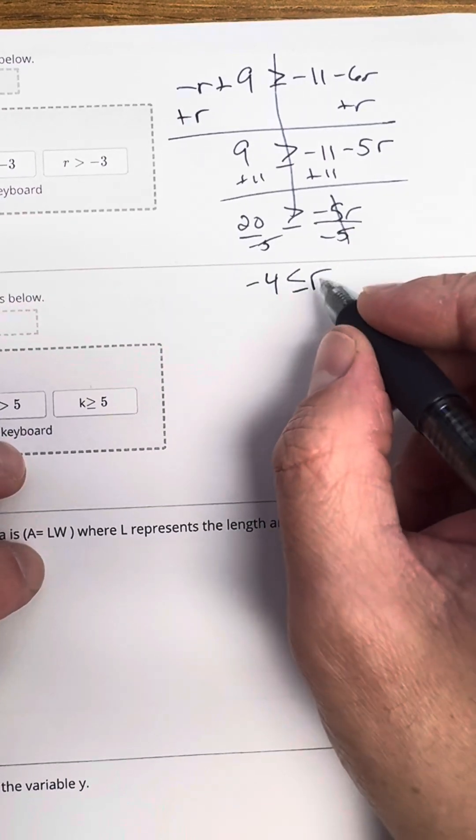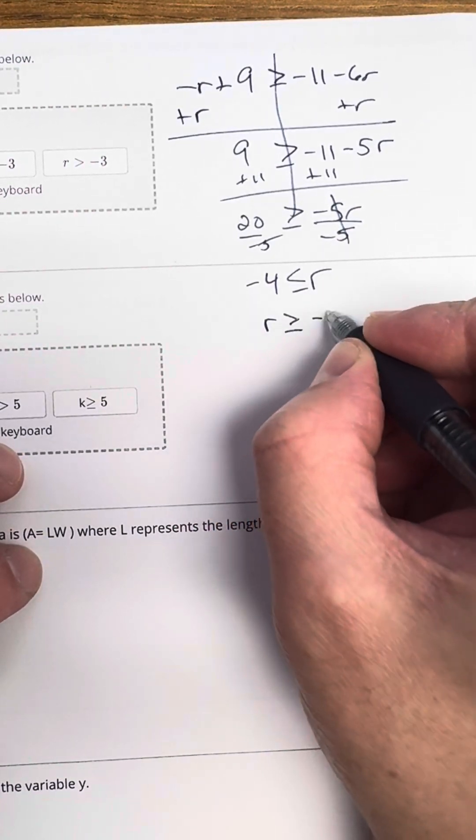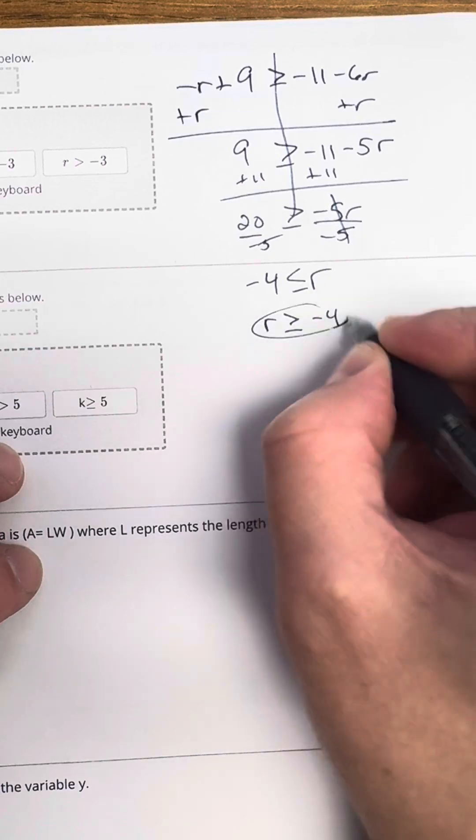But again, our problem is our variable is on the right. We need it to be on the left. So we're just going to literally flip everything around in order to get our right answer. So R is going to be greater than or equal to negative 4, which is going to be this first choice.